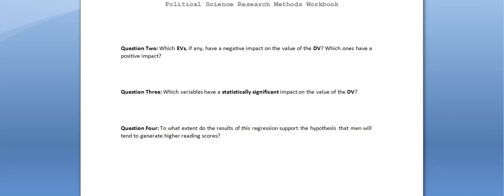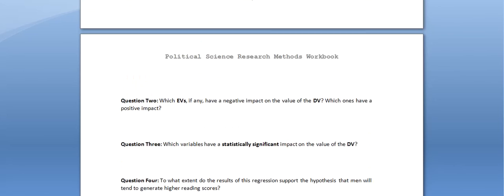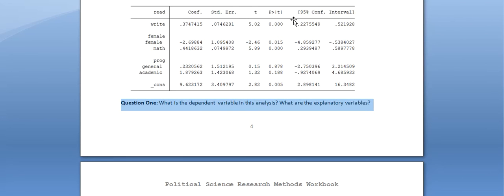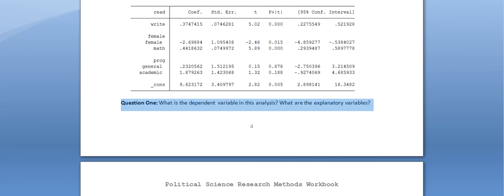Question three: Which variables have a statistically significant impact on the dependent variable? Any variable with a p-value less than 0.05 qualifies. Writing is statistically significant (p=0.000). Female is statistically significant (p=0.015). Math is statistically significant (p=0.000). General academic progress is not significant (p=0.878). So the statistically significant predictors of reading score are write, female, and math.